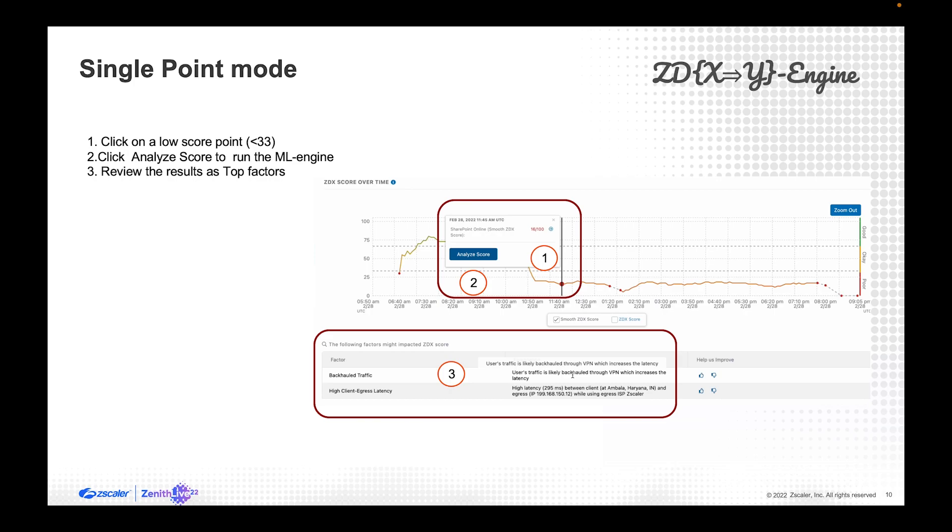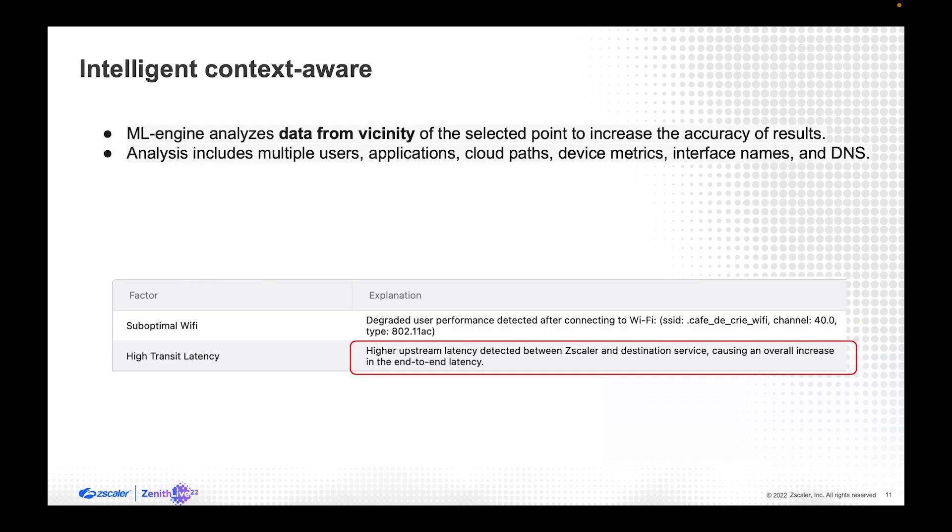In a matter of seconds, I have my output and the output shows me the top factors, a little bit of explanation what's going on. And there is also a supervised feedback loop for our supervised learning. It's important to know that although I click on a point in time, the AI looks around that time, because there may be tips around that point in time that help us increase the accuracy and precision of the root cause analysis.